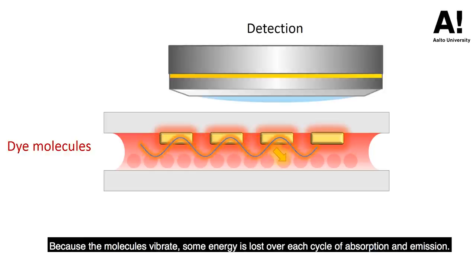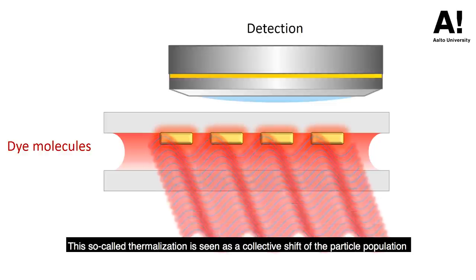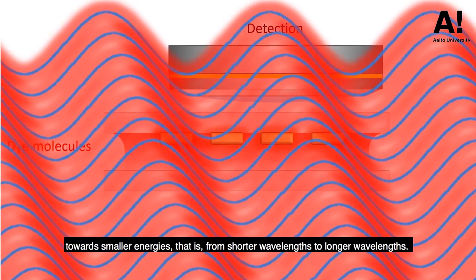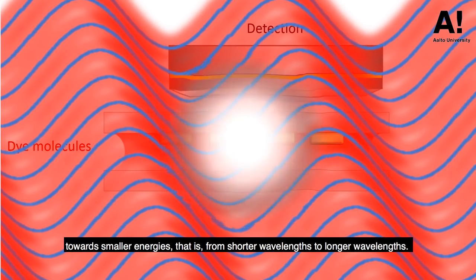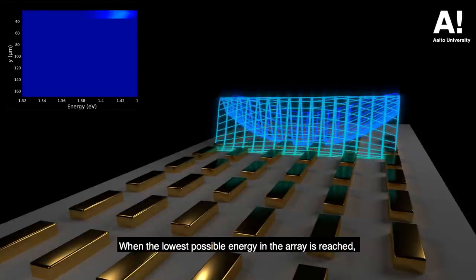This so-called thermalization is seen as a collective shift of the particle population towards smaller energies—that is, from shorter wavelengths to longer wavelengths. When the lowest possible energy in the array is reached, the particles form a Bose-Einstein condensate.